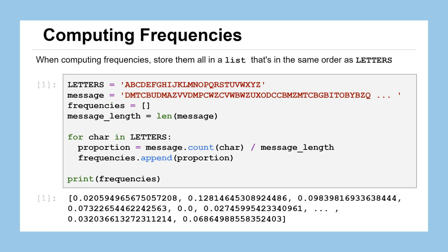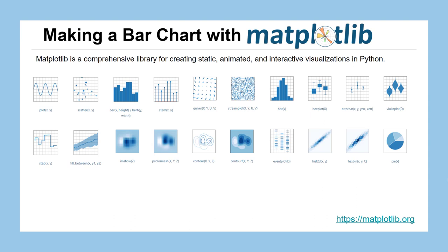Let's take a look at how we can actually start to use these values to create a bar chart. In this course, we're going to be using a Python package — or library as it's called — named matplotlib to create some visualizations in Python. Much like how we can write our own functions, other people who write their own functions can share them in a collection called a package. You can see there are a lot of functions in this matplotlib package — graphs, scatter plots, bar charts — but there's a lot of other functionality we won't touch on in this course. If you're interested in learning more, I recommend checking out the matplotlib website.